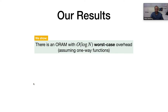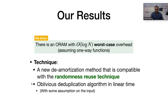Our results: we show that there is an ORAM with O(log n) worst case overhead. We show a new de-amortization method that is compatible with the randomness reuse technique, meaning in particular that we show how to de-amortize the Optorama construction. Along the way, we also show a new algorithm for removing duplications in an array, which might be of independent interest. The algorithm works in linear time assuming some assumption on the inputs, whereas the best known algorithm without this input assumption requires O(N log N).